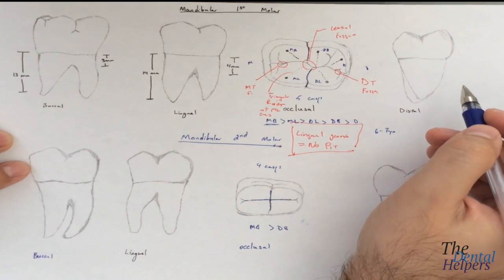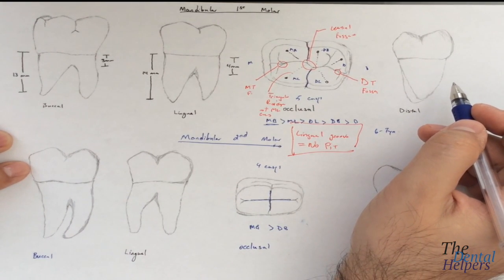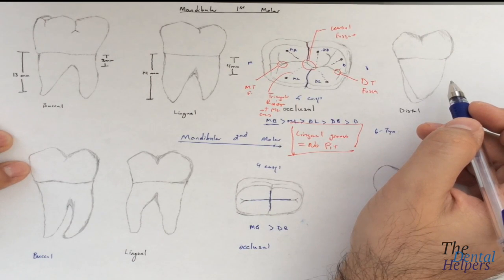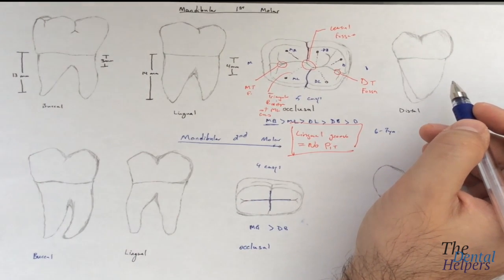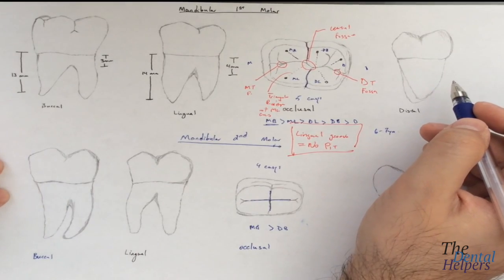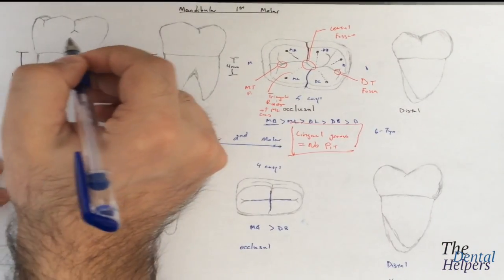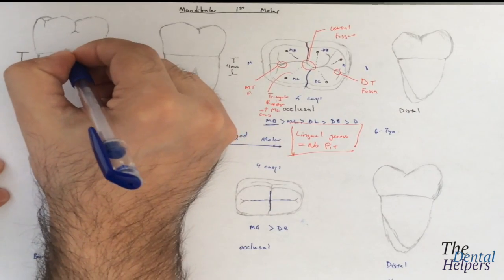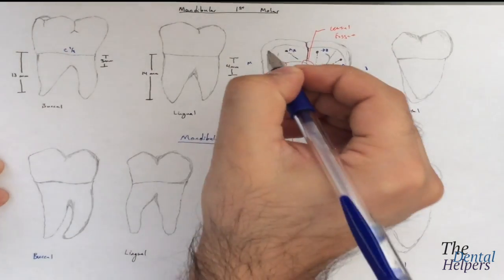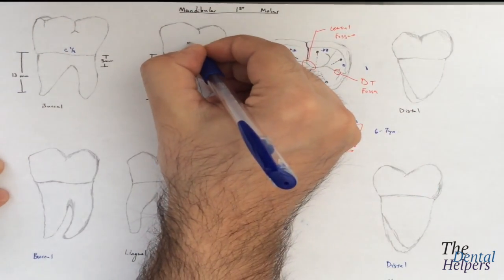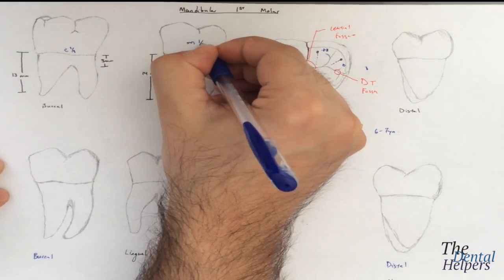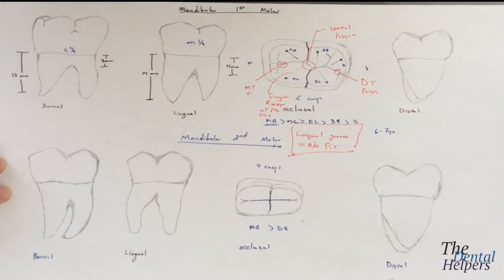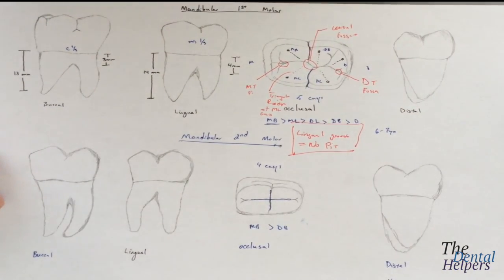In terms of the height of contours, it's going to be about the same. From the facial, the height of contours is going to be in the cervical third. From the lingual, it's going to be in the middle third. This was exactly the same thing we saw before in the maxillary teeth.